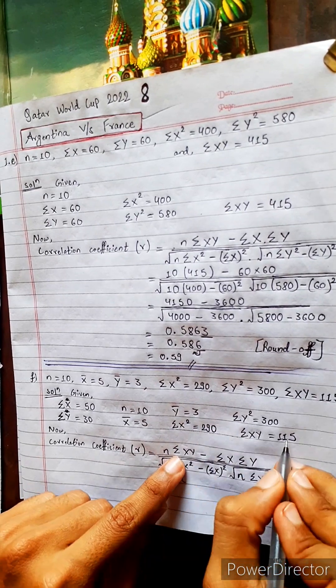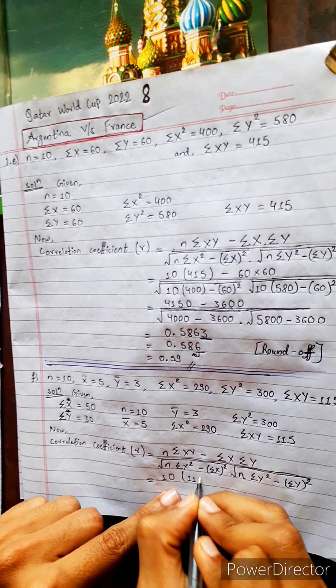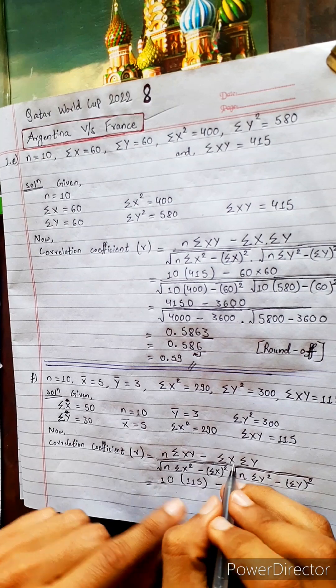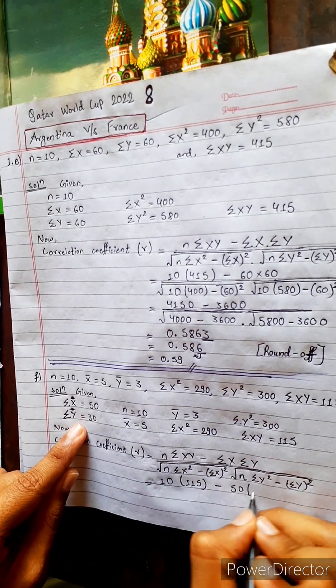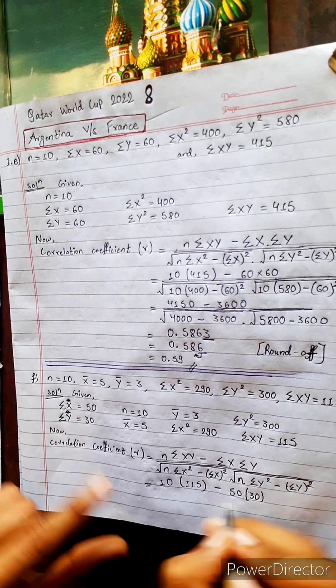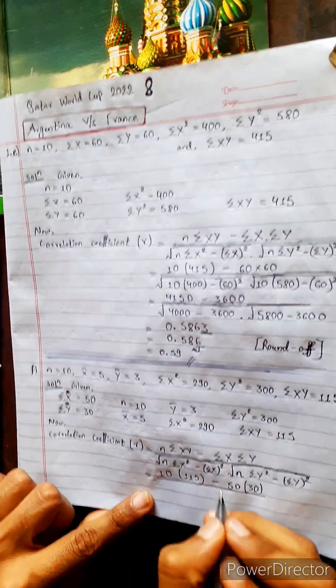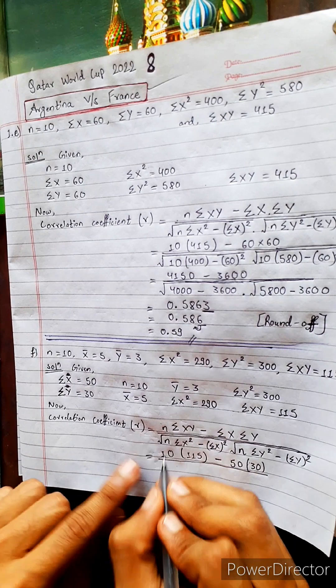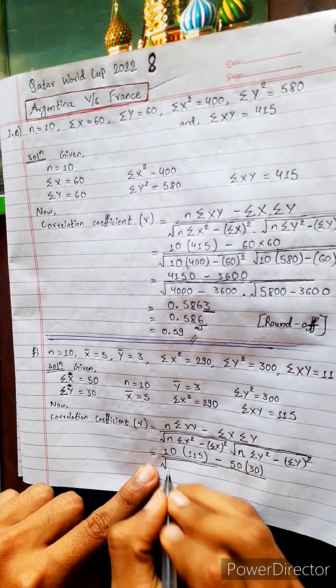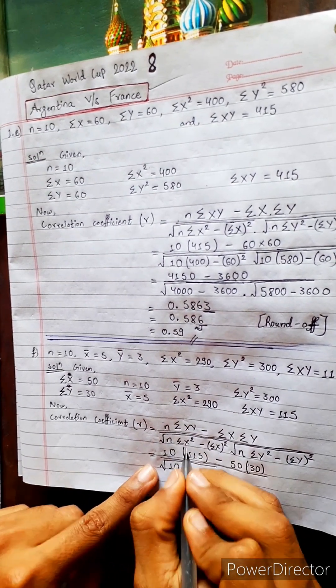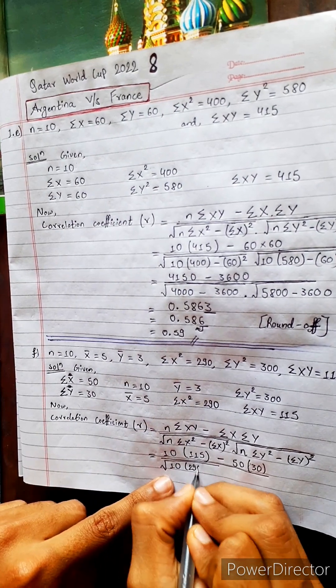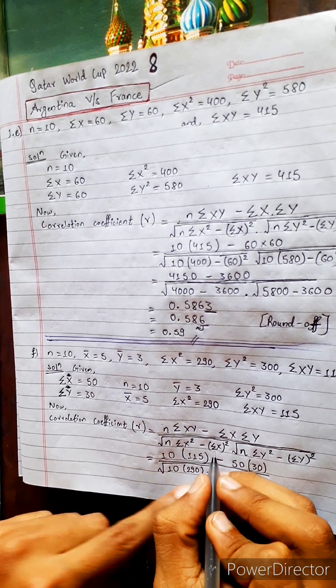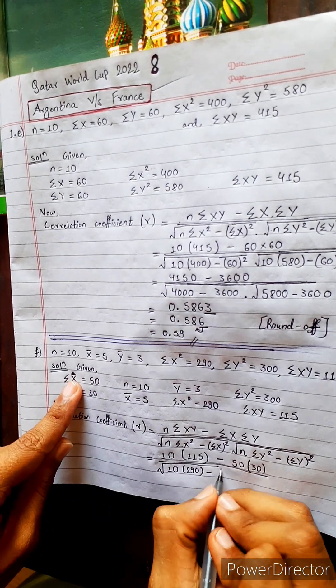Where is this? 115 here, summation x 15, summation y 30. Divided by, okay, divided by, don't do time waste, the write there directly: 10, x square, okay, here 290.